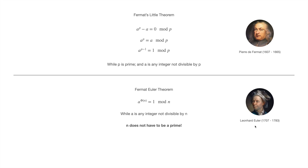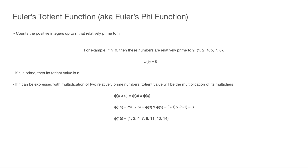Fermat's Little Theorem was generalized by the famous Swiss mathematician Euler, giving us Fermat–Euler theorem, or simply Euler's theorem. It states that a to the power of φ(n) is equal to 1 mod n, where a is any integer not divisible by n — in other words, a and n must be relatively prime. In this case, the modulus n does not have to be a prime number.